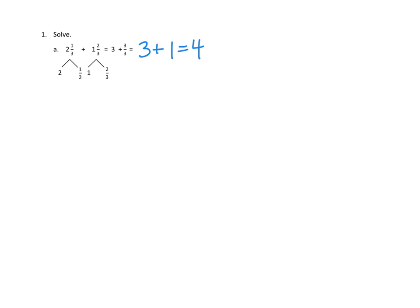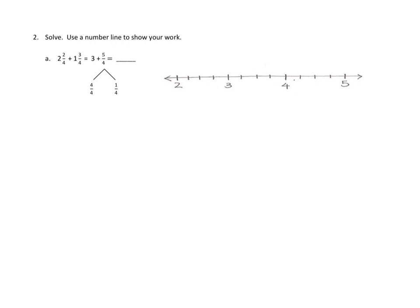I'll let you go ahead and work on the other problems in number one. Problem number two — directions: Solve. Use a number line to show your work. We've got two mixed numbers: two and two-fourths plus one and three-fourths. The way they've done this is similar — add up the whole numbers first: two plus one is three. Then add the fractional parts: two-fourths plus three-fourths is five-fourths. They do one extra thing though — they break down that five-fourths into another whole and a part.